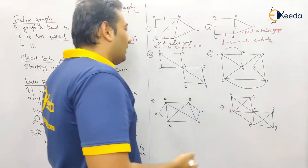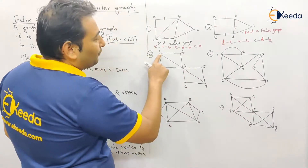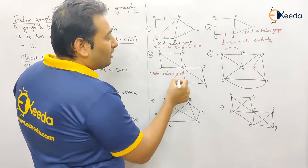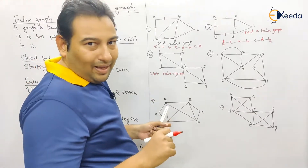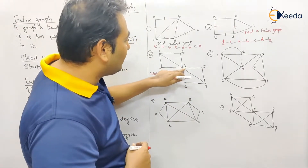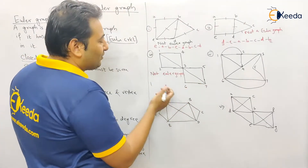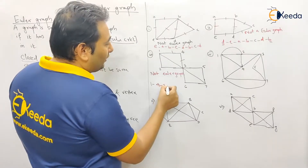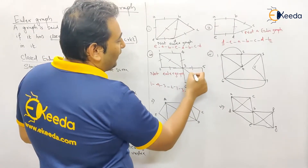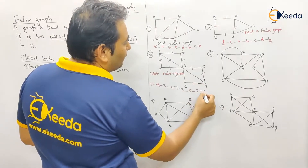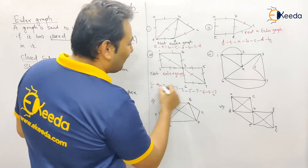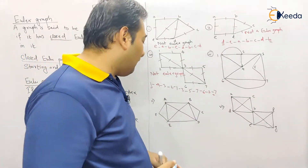Moving to the next graph: one vertex has odd degree, so it's not an Euler graph and there's no closed Euler path. Checking: exactly two vertices (1 and 7) have odd degree, so there will be an Euler path. The path: 1→4→3→2→1→3→5→7→6→3→7. Started at vertex 1, ended at vertex 7 — vertices may be repeated, all edges traversed once.